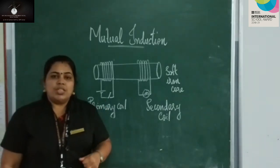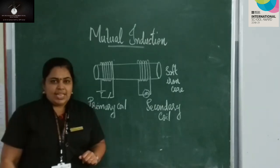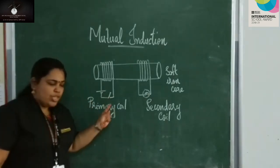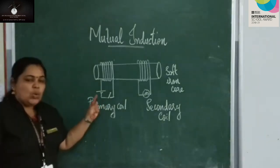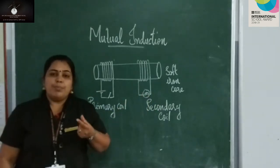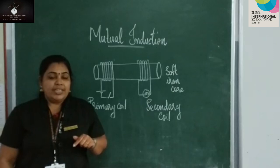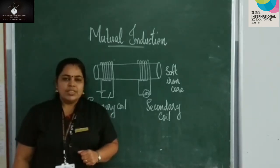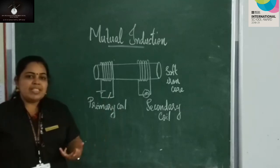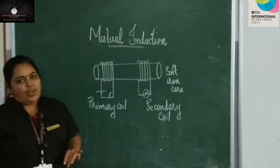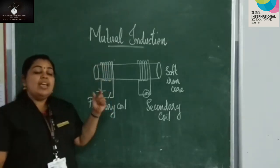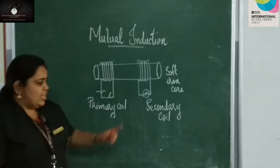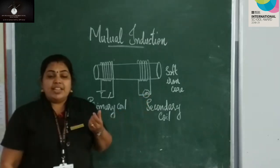What can you observe when the switch is on? When the switch is on, the bulb glows for a moment and then turns off. When you switch on this circuit, the bulb in the secondary coil glows for a moment and then turns off. What happens when you switch on the circuit? There is a change in the magnetic flux. Due to the change in the magnetic flux, an EMF is induced in the secondary. That is why the bulb glows.